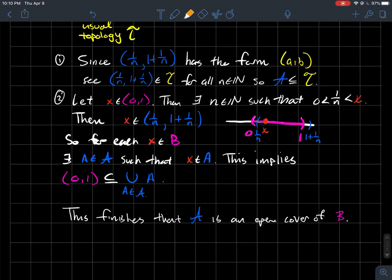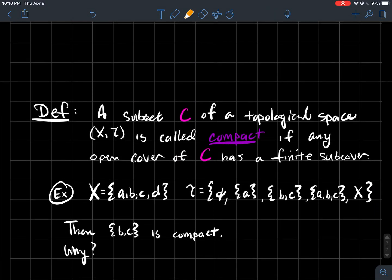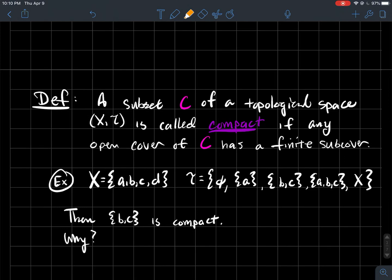So the next important definition is the idea of what it means to be compact. A subset C of a topological space, X with topology T, is called compact if any open cover of C has a finite subcover. So what on earth does that mean?